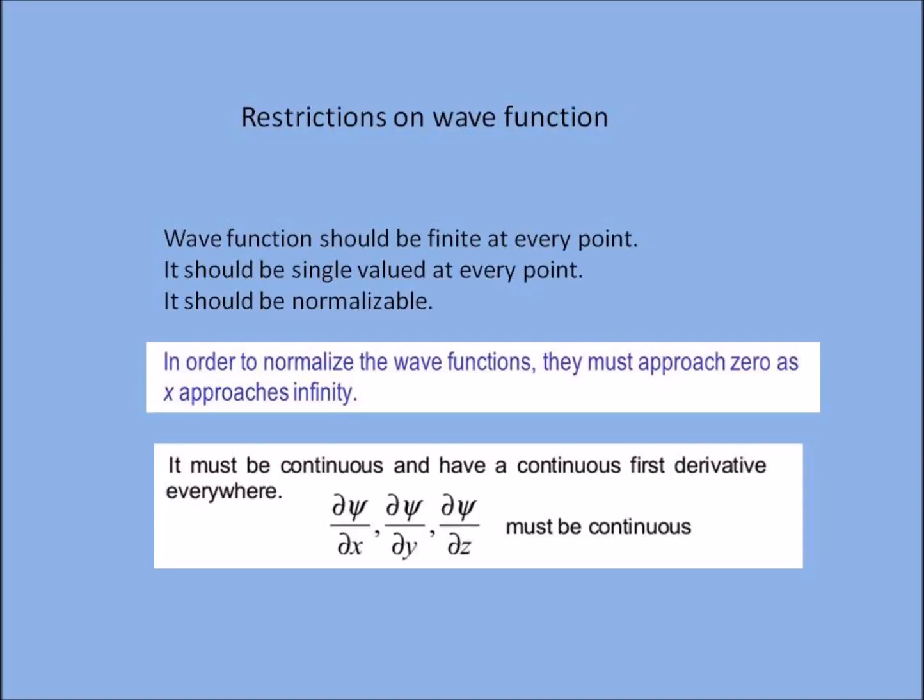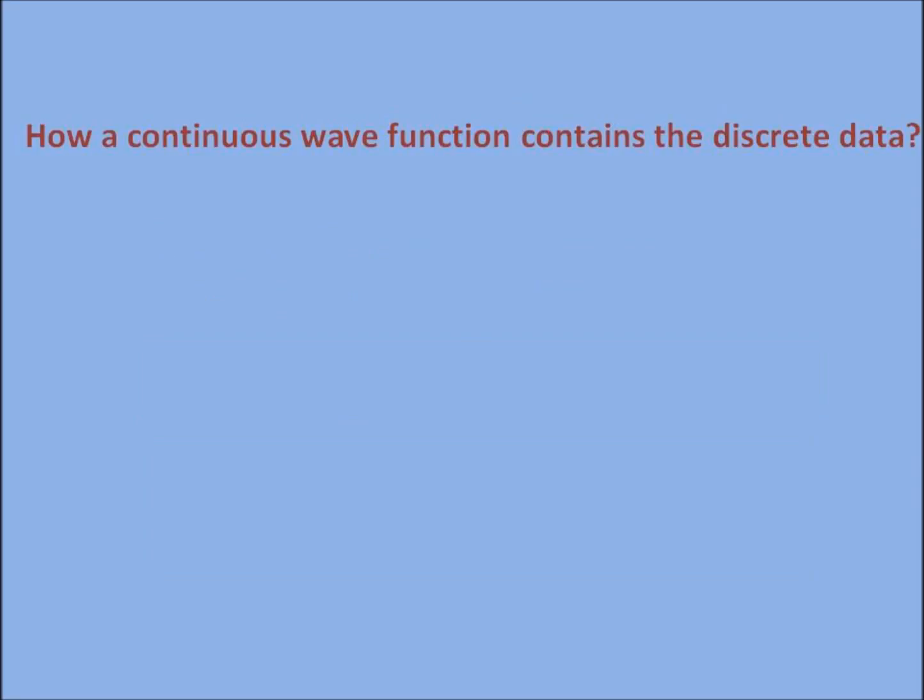It must be continuous and its first derivatives are also continuous everywhere. What does this mean? How can a continuous wave function contain the discrete data? Because in first video we have seen that quantum word itself means discreteness, so is this contradictory?